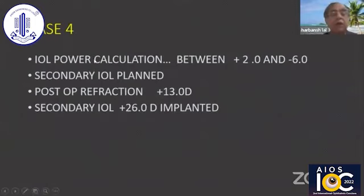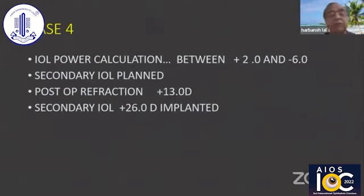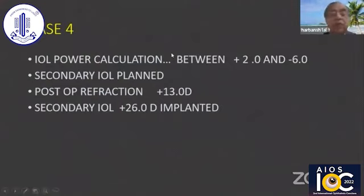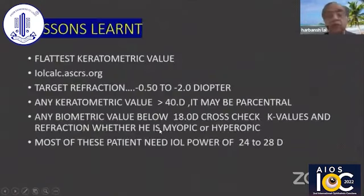In another case, there was an IOL power calculation issue where the predicted IOL power ranged between plus 2 and minus 6. So we planned for a secondary IOL. The post-op refraction was plus 13, and we implanted a 26-diopter lens.